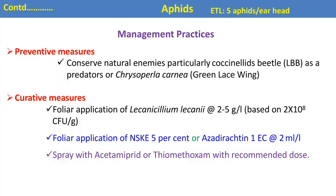For aphid management, biological control can employ predators such as coccinellid beetles (ladybird beetles) and Chrysoperla carnea (lacewing), which directly feed on both nymphs and adults. The entomopathogenic fungus Lecanicillium lecanii can be sprayed at 2 to 5 grams per litre. For botanical control, 5% neem seed kernel extract and azadirachtin at 2 ml per litre are effective. For chemical control, acetamiprid and thiamethoxam are recommended insecticides against aphids in wheat.